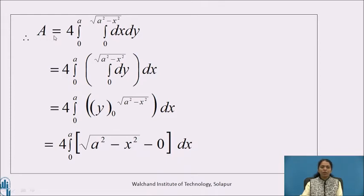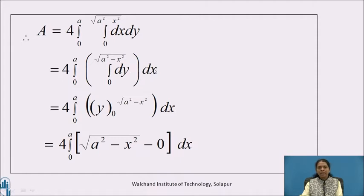Therefore, the formula for area becomes: A = 4 ∫(0 to a) ∫(0 to √(a²-x²)) dy dx. We will integrate with respect to y first, because the limits of the inner integration are in terms of x. Integration of dy is simply y. Substituting the limits, it becomes 4 ∫(0 to a) [y](0 to √(a²-x²)) dx, which equals 4 ∫(0 to a) √(a²-x²) dx.